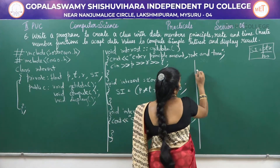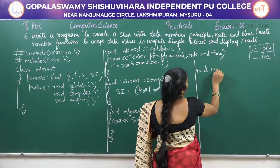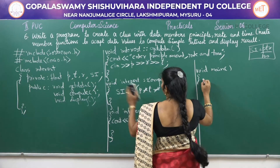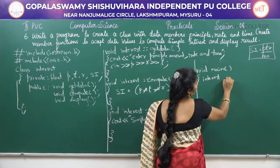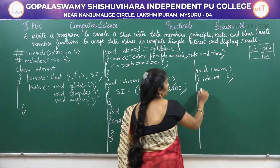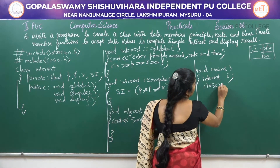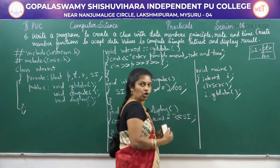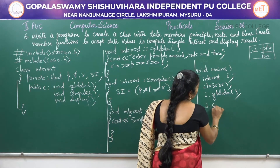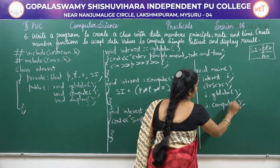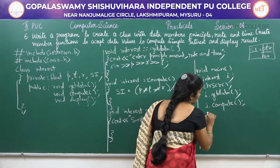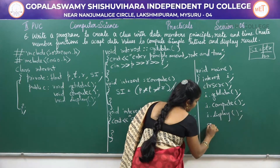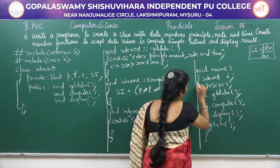Now we will write the main program: void main(). Here, first step is to create the object. The class name is 'interest', then leave one space, and 'I' is the object name. Then call clrscr(). Call the functions one by one using the object: i.getdata(), then i.compute(), then i.display(). Then getch() and close the main program.